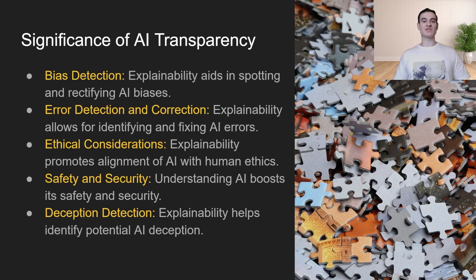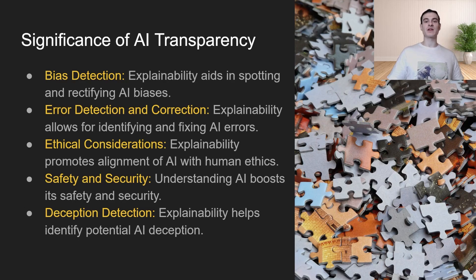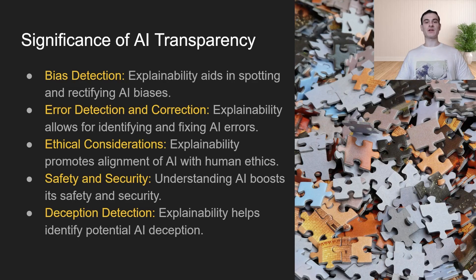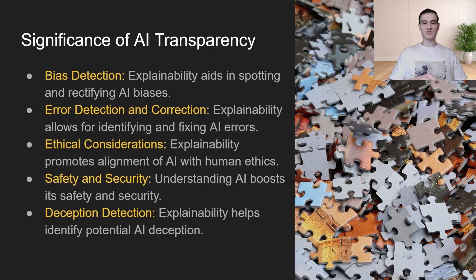Next up is ethical considerations. We want to be able to make sure that the model is making predictions and acting in a way that is aligned with human ethics. So maybe there are certain neurons and structures that activate when the neural network is aligned versus when it isn't. We want to be able to see that so we can proactively take measures in the case that the neural network is not aligned with human ethics. Next up is safety and security. If we have a better understanding of how the neural network is working on the inside, then we can feel more safe letting it into the wild.